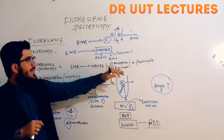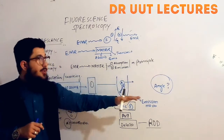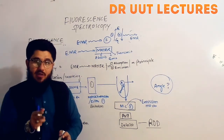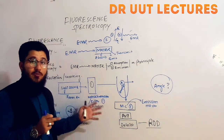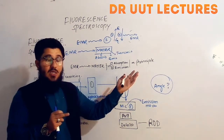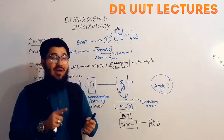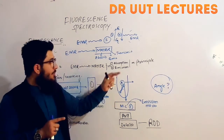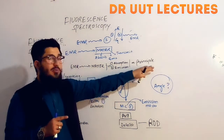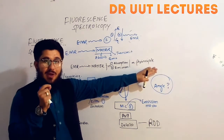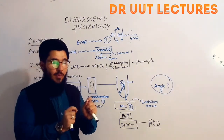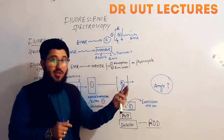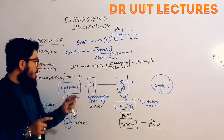The next heading is principle. What is the principle of this spectroscopy? The principle is very simple — don't make it complex by mixing in the theory of working. The principle is the very rule that this spectroscopy follows, and that rule is absorption and emission. So the principle of fluorescence spectroscopy is that it involves both absorption and emission of electromagnetic radiation.